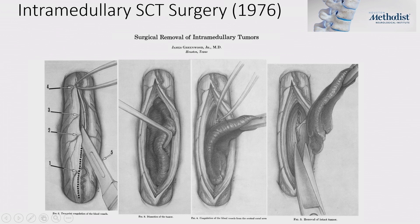James Greenwood's publication illustrated the basic surgical steps. An incision called a midline myelotomy is made in the back of the spinal cord, right in the center between the two dorsal columns to avoid major morbidity. The second step involves dissecting to establish a plane around the tumor. The third involves cauterizing blood vessels that supply the tumor — these tend to come from the central canal — and then removing the tumor.